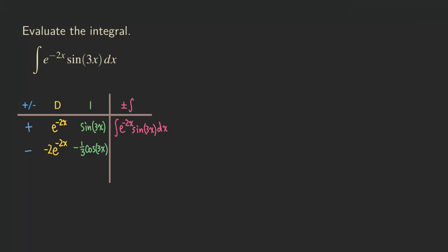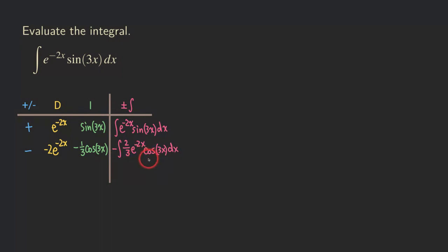Now we multiply all this together. We get a negative integral because there are three minus signs — an odd number — so we get a minus sign. The result is negative the integral of 2 over 3 e to the negative 2x cosine of 3x dx. But as you can see, that's a different integral — also a product of an exponential function and a trig function. So now let's do it one more time. This is the first iteration, so let's do it a second time and see what happens.